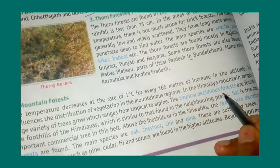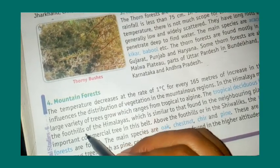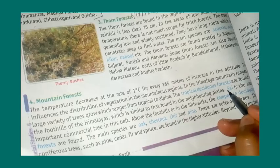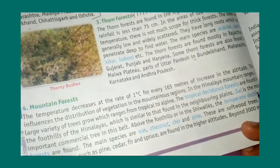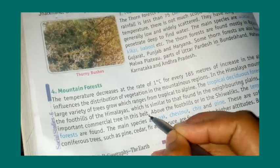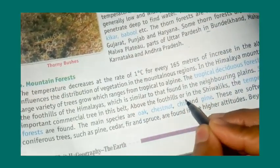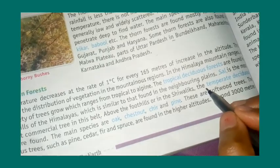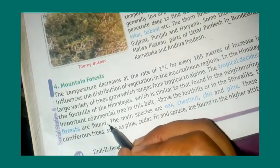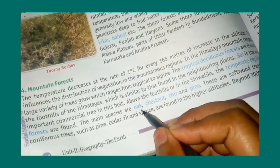The Siwalik forests are found in the foothills. The tropical forests here are similar to those found in neighboring regions. Sal is the most important commercial tree of this region. Above the foothills in the Siwalik range, temperate forests are found.